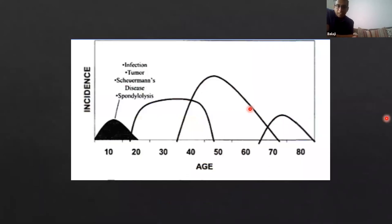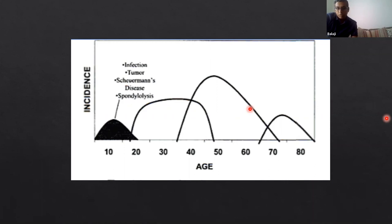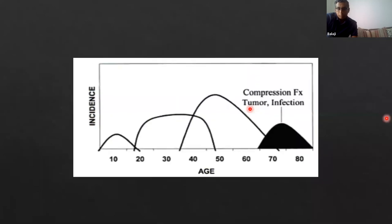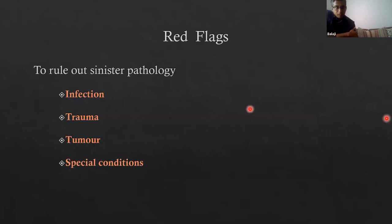Looking at the age distribution, from age 20 to 65 the majority of conditions are degenerative. In patients under 20 presenting with back pain, you should be thinking about infection and tumor first, followed by Scheuermann's disease or spondylolysis. In the older age group, you should be thinking about tumor, infection, and fractures — including pathological fractures from osteoporosis that can occur without significant trauma. To rule out sinister pathologies, we specifically look for red flag symptoms for infection, trauma, tumor, or cauda equina syndrome.